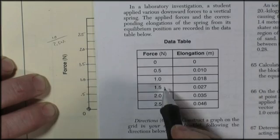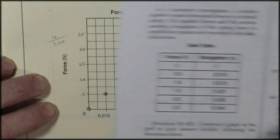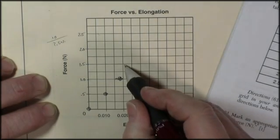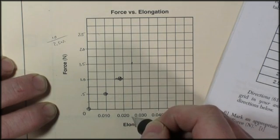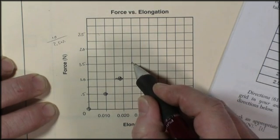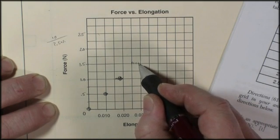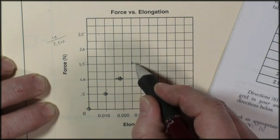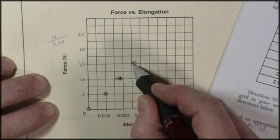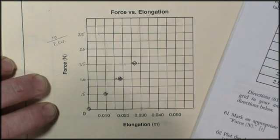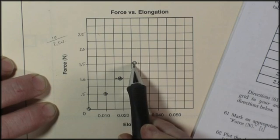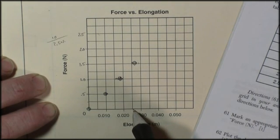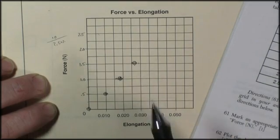We then go to 1.5. We've got to have 0.027. So 1.5 and 0.02. Now again, that would be 0.025, then 6, 7, 8, 9 there. So 6, 7, let's call it right about here. And again, we're just to the left of the center point, because the center point would be 0.025, 0.0275 would be the center point. So just a little bit to the left of the center point.